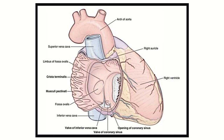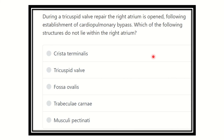Hi everyone, welcome to another question-and-answer session for a medical exam. During a tricuspid valve repair, the right atrium is opened following establishment of cardiopulmonary bypass. The question asks which of the following structures does not lie within the right atrium.